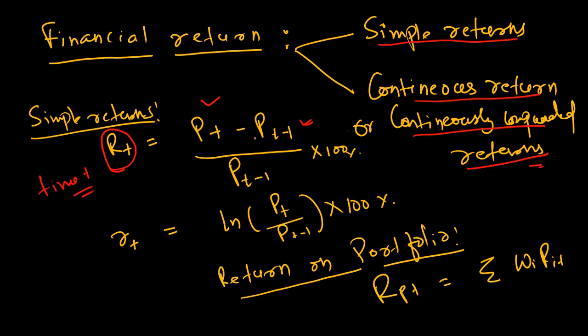What the change in price, divided by the price in the previous period, and then we multiply with 100 percent to get the return percentage. That is the simple returns.